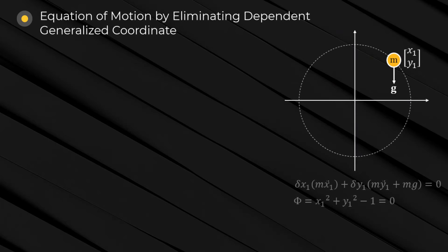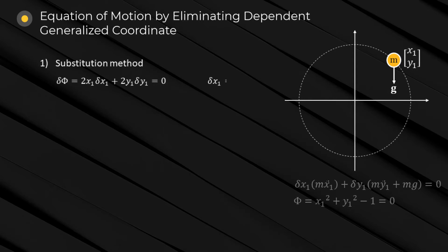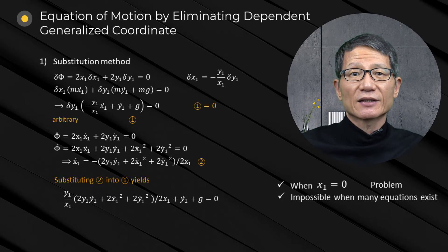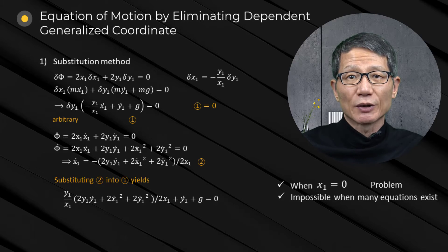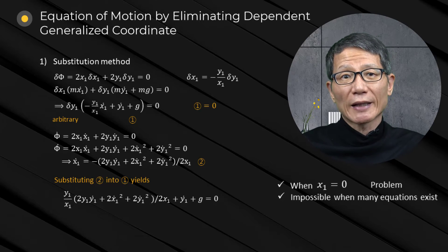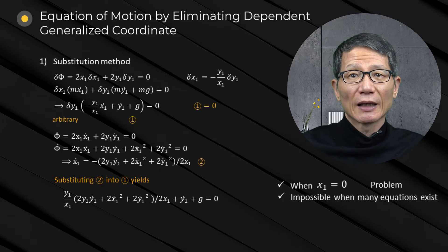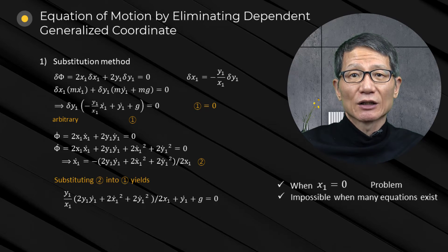Equations of motion with constraints can be handled by two methods. The first is to eliminate dependent generalized coordinates and express the equations of motion only in terms of independent generalized coordinates. In this example, x is selected as the dependent generalized coordinate and eliminated, so the final equations of motion are expressed only in terms of y, the independent generalized coordinate.